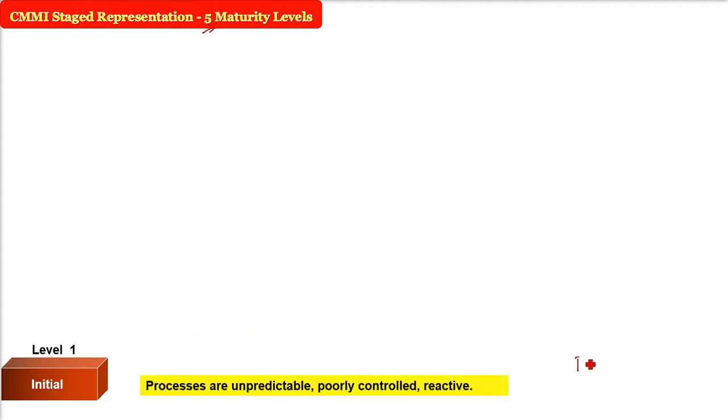CMMI stage representation describes five maturity levels. Every organization is characterized as one. If the organization is level one, it's called initial. Processes refer to the way work is done, a combination of tasks and activities. At level one, processes are unpredictable, poorly controlled, and the approach is often reactive rather than proactive. If something happens, then we react.